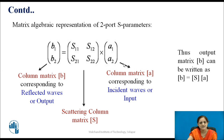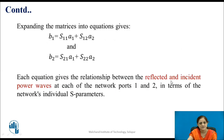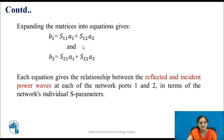The output matrix B can be written as the scattering matrix multiplied with the input. Expanding the matrices into equations, we get: B1 is the output taken out of port 1, and B2 is the output reflected at port 2. So B1 equals S11·A1 plus S12·A2, while B2 equals S21·A1 plus S22·A2. Each equation gives the relation between the reflected and incident power waves at each network port in terms of the network's individual S-parameters.